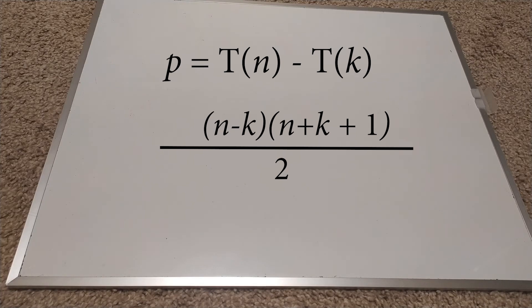n minus k times n plus k plus 1 over 2, where both k and n are non-negative integers and n is at least 2 more than k. I'll let you chew on why that should be.